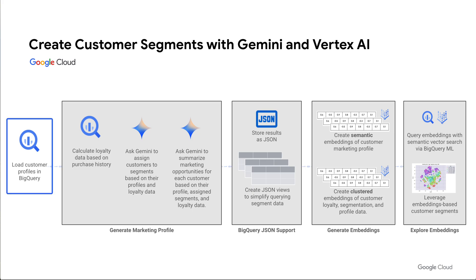We start by loading our customer profiles into BigQuery. For our demo app, we generated the profile data using Gemini's new structured generation feature, which provides predictable JSON-formatted output based on the flexible OpenAPI spec response schema. In the real world, you might source this data from multiple internal and external data sources like CRM systems, order history, social media, public records, and third-party data providers.